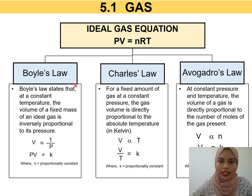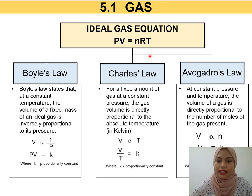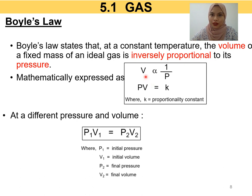Back in high school, you studied three gas laws: Boyle's Law, Charles' Law, and Avogadro's Law. These three gas laws are what PV = nRT comes from. Boyle's Law states that volume is inversely proportional to pressure at constant temperature and number of moles. If you have two different pressures and volumes, you use the equation P1V1 = P2V2, where P1 and V1 are the initial pressure and volume, and P2 and V2 are the final pressure and volume you want to find.